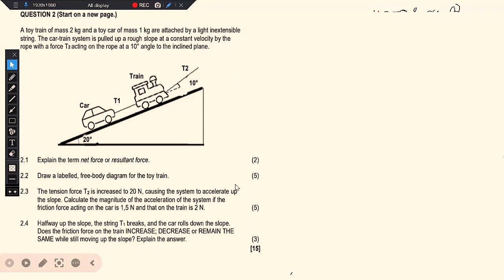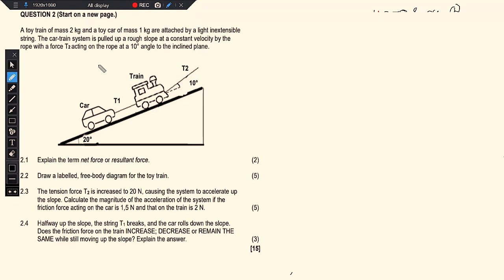Question 2.4 says: halfway up the slope the string T1 breaks and the car rolls down the slope. Does the friction force on the train increase, decrease, or remain the same while still moving up the slope? We need to determine whether breaking T1 affects the friction on the train.